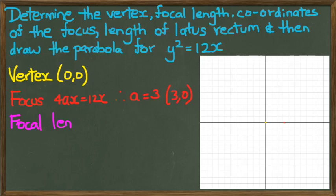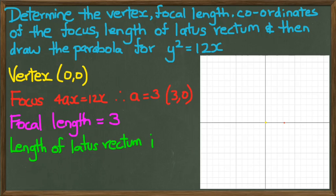The next thing is we also know what the focal length is—the focal length is going to be 3, and that's the distance between the vertex and the focus point itself. So it's between the yellow and the red dot, that's three units. The length of the latus rectum we know is 4a.